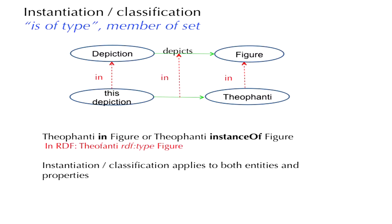Instantiation is an 'is of type' or 'member of set' declaration. Take the simple example: depiction depicts figure. We have the entity class depiction, the relation depicts, and the range of depicts is figure. If we take any particular depiction — such as this depiction that depicts Theophany — we actually have three instantiations: the declaration that this depiction is a depiction, that Theophany is an instance of figure, and that the association between this depiction and Theophany is an instance of the relation depicts.